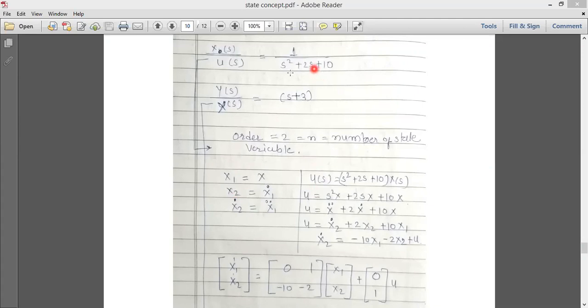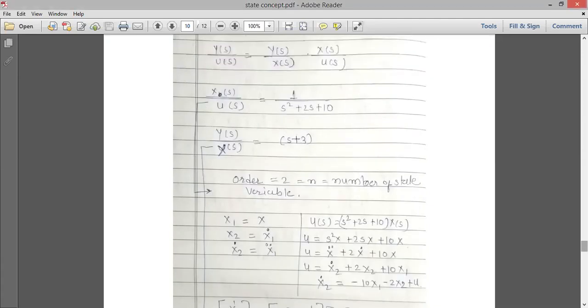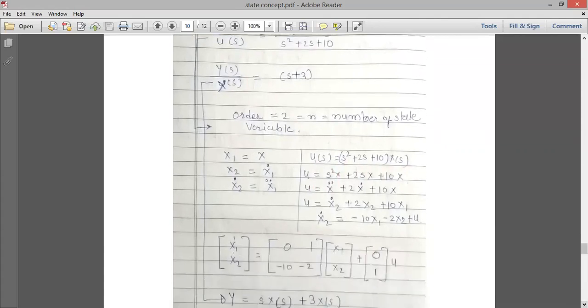Now using this equation, the transfer function equation splitting x and u(s), we do the cross multiplication and then u(s) is equal to (s^2+2s+10) into x(s). So u is equal to, now do the changes in the variable. So after Laplace multiplication it will be x_double_dot + 2x_dot + 10x. Now we know what is x? x is equal to x1. x_dot is equal to x2. And x_double_dot means x1_double_dot is equal to x2_dot.